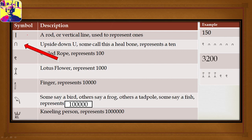The first thing to note is we have a vertical rod which represents 1, so 1 up to 9 would be represented by vertical rods. The heel bone represents 10, so after 9 rods we would have a heel bone. A coil of rope represents 100, the lotus flower represents 1,000, the finger represents 10,000, the bird, frog, or tadpole represents 100,000, and the final character, a kneeling person, represents 1,000,000.